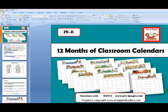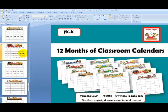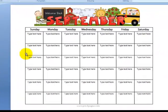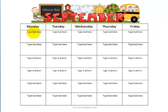Here we are in my classroom calendars file. Let's scroll down to September. You'll notice that you have two options: a monthly calendar with seven days or a monthly calendar with five days. You choose the calendar that best meets your needs. Just like the newsletter file, the only thing you're able to edit on the page is the text.